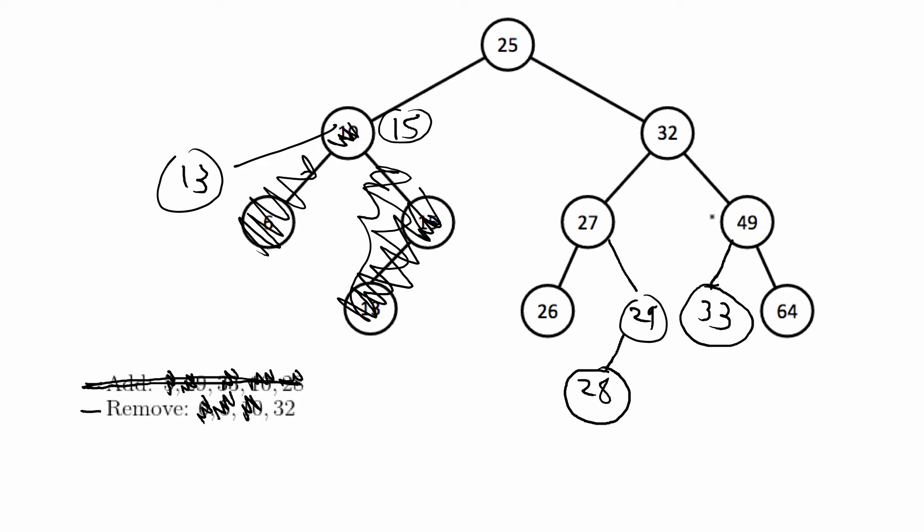So 32 is the case where you have to consider two child nodes, so in my case I think I will just bump up the smallest value on the right subtree.